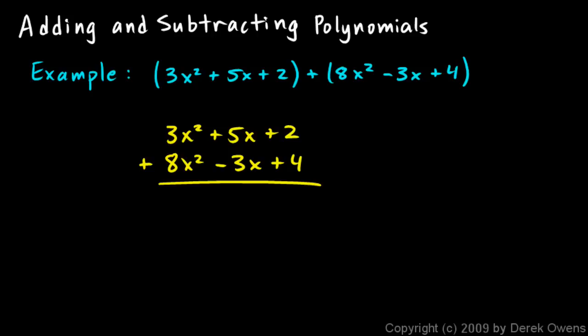And we simply add them up. The 3x² plus the 8x² adds up to 11x². And then I have a 5x and a -3x, and that gives me a +2x, and then I have a +2 and a +4, so that's a +6.